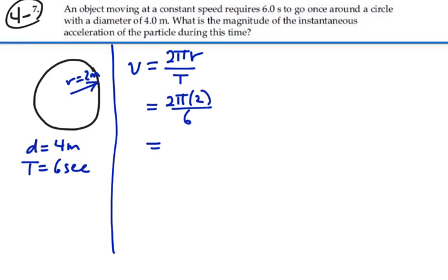Four pi divided by six will be its speed, and that is 2.09 meters per second. So that's the speed as it's going around.